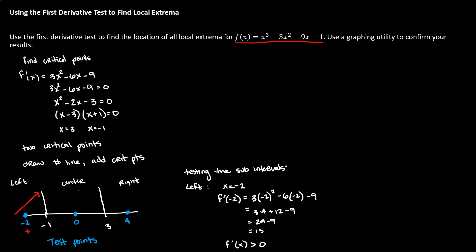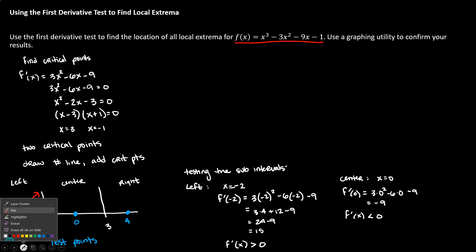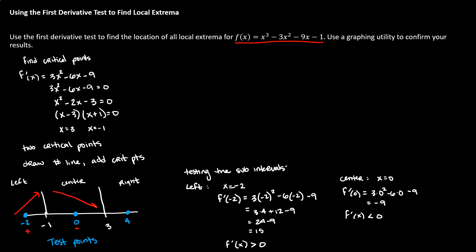For the center sub-interval the test point was 0. Plugging 0 into the derivative: 3(0)² − 6(0) − 9 = −9. The derivative is negative in the entire center interval, so we place a negative symbol there and draw a decreasing arrow to represent that the function is decreasing in that sub-interval.